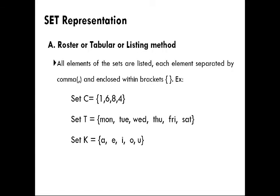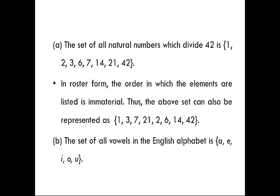Another example: the set of all vowels = {a, e, i, o, u}. Another example: the set of all natural numbers which divide 42. By 1 you can divide 42; by 2, 3, 6, 7, 14, 21, and 42 as well. In roster form: {1, 2, 3, 6, 7, 14, 21, 42}. Since order doesn't matter, I can also write {1, 3, 7, 21, ...} in any order.